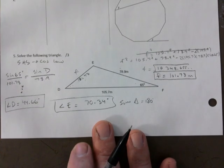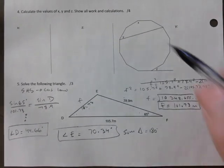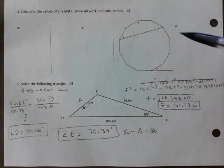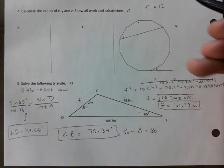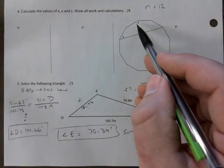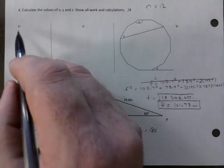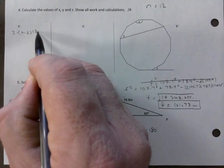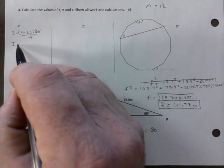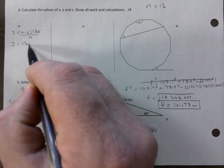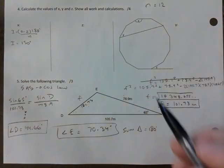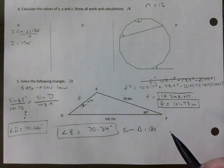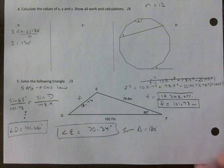For question 4, you count the number of sides of that polygon. And you have 12 sides. So solve for X first. That's the interior angle. Which is N minus 2 times 180 over N. So that would be 150 degrees. Y is 45. And Z is 30.